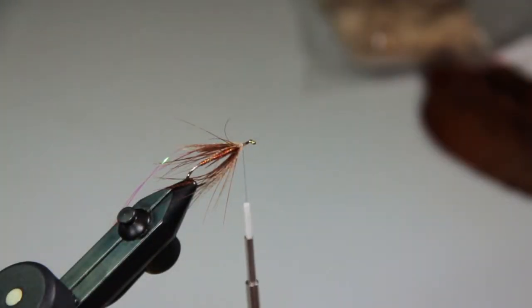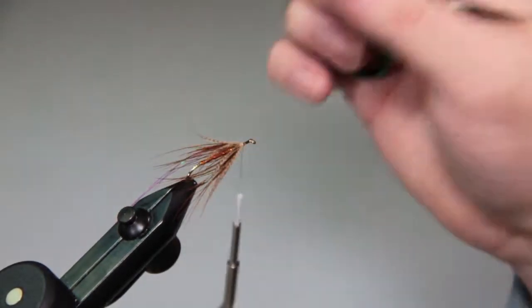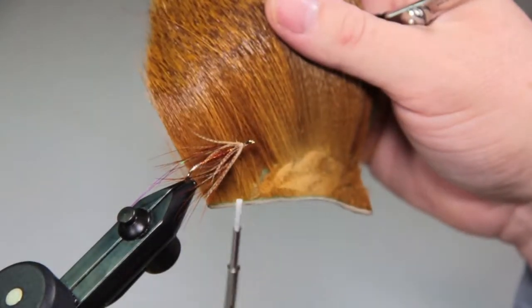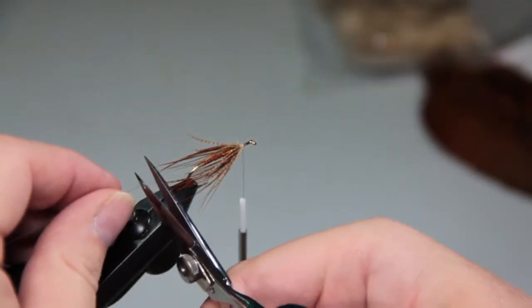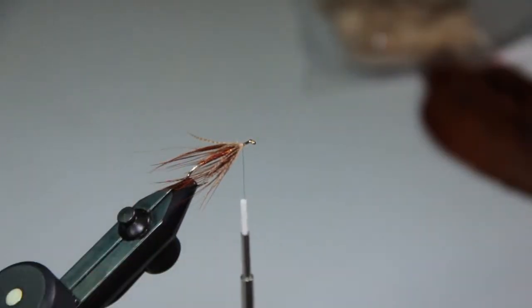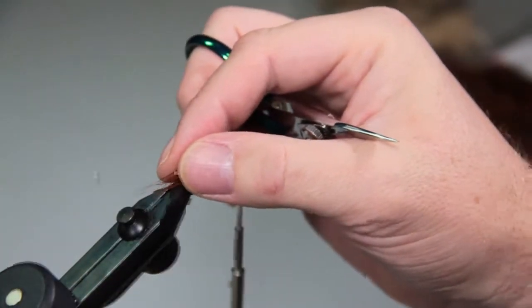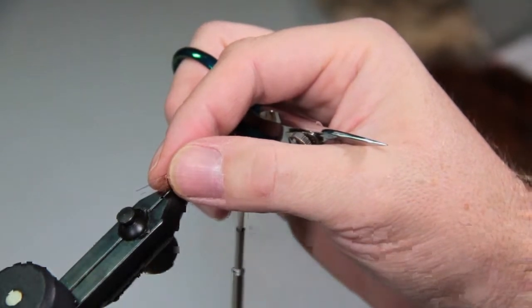So now we're going to put on our little muddler head, and that's going to be a golden tan spinning deer. You can use a spinning elk if you like, just find a piece that flares nicely as a key. So the longest these two little flash guys are going to wiggle out there off the back, so we'll just cut those just a little longer than everything else.